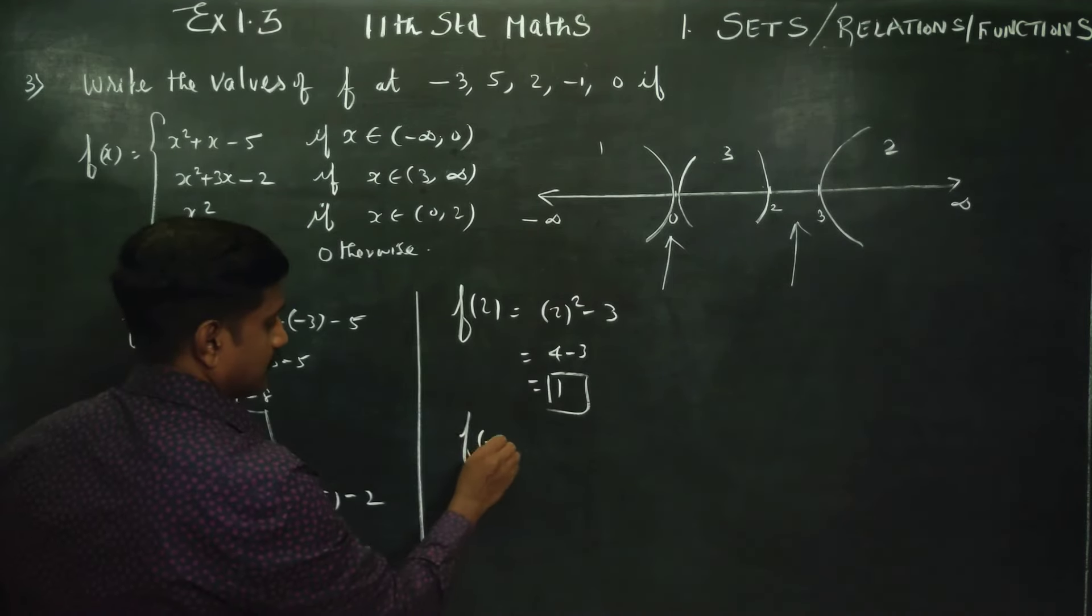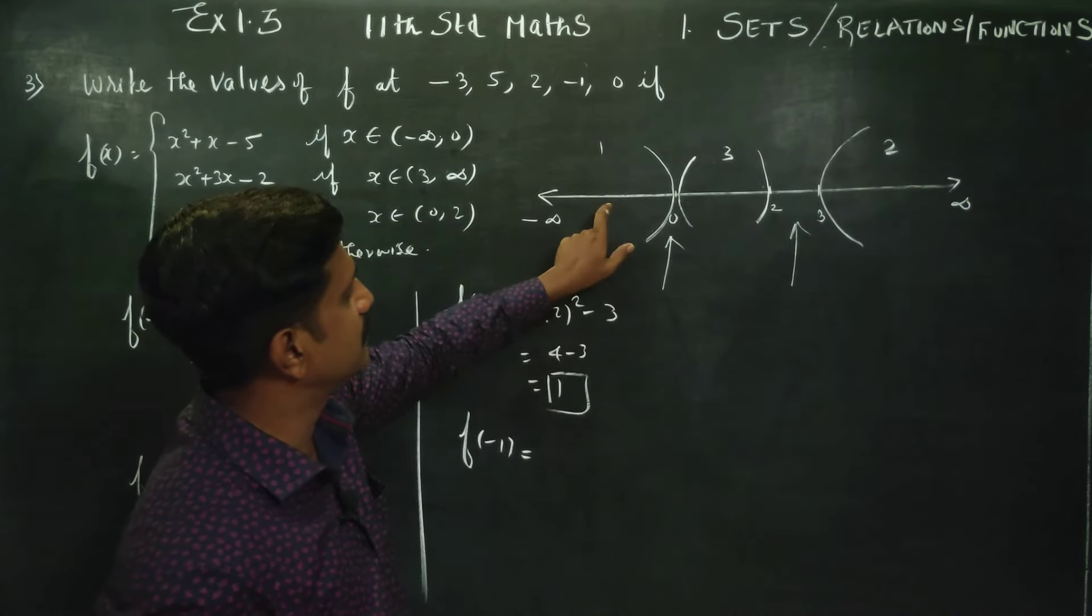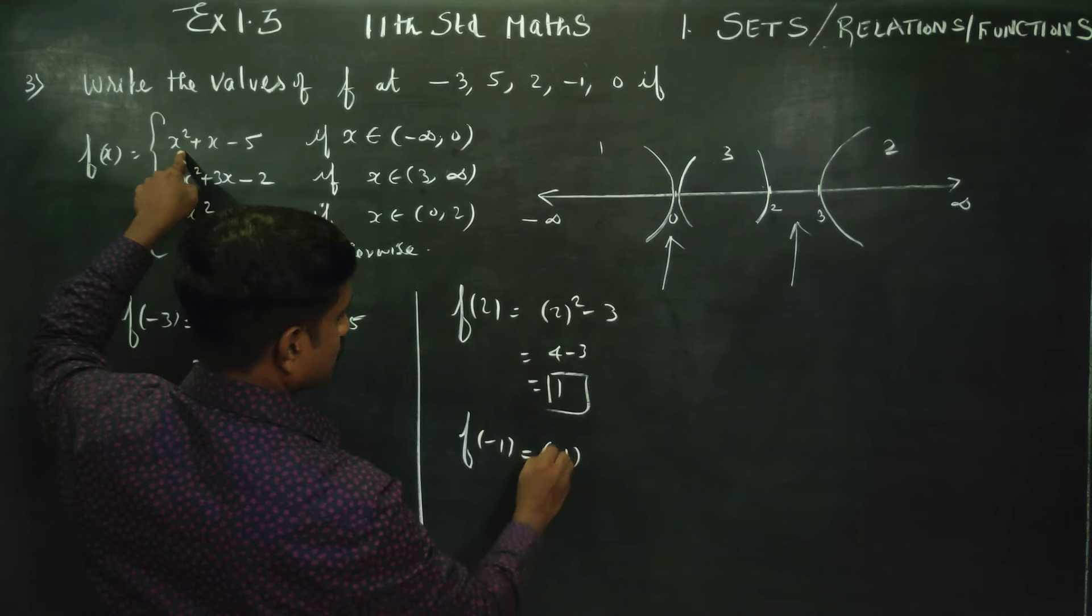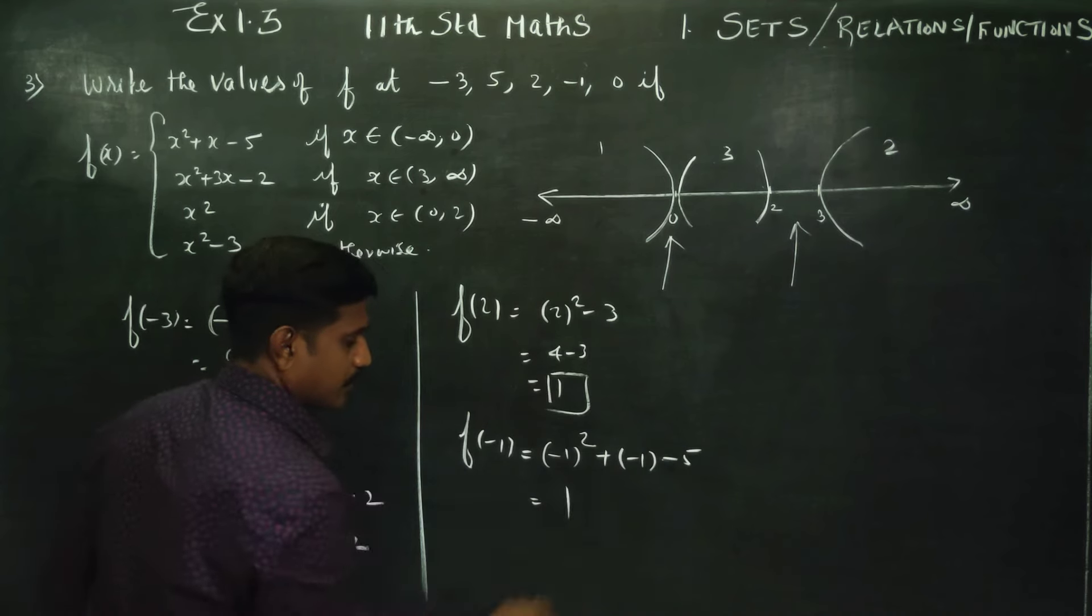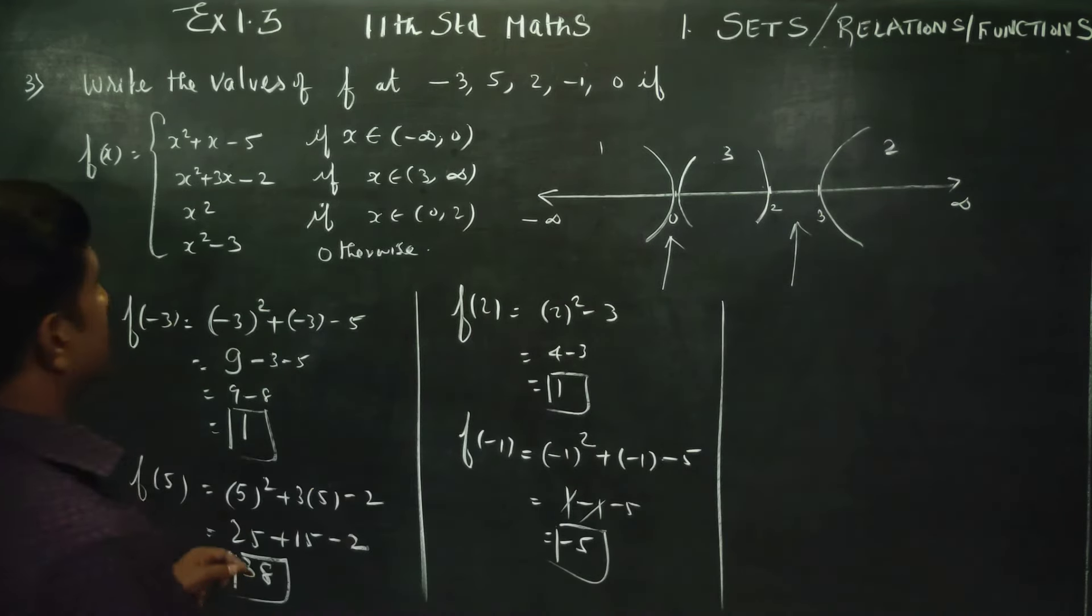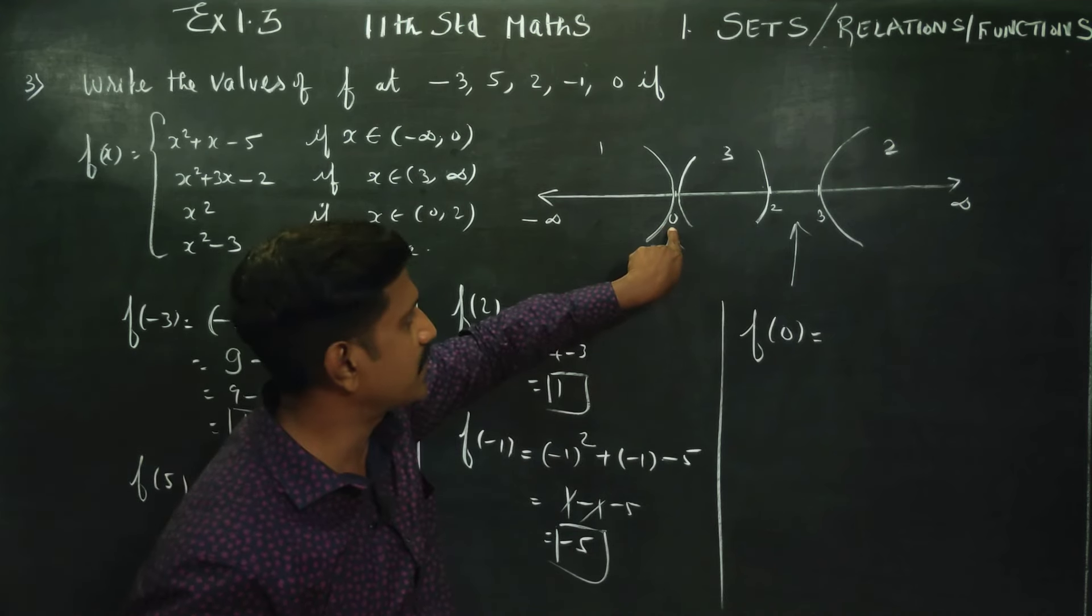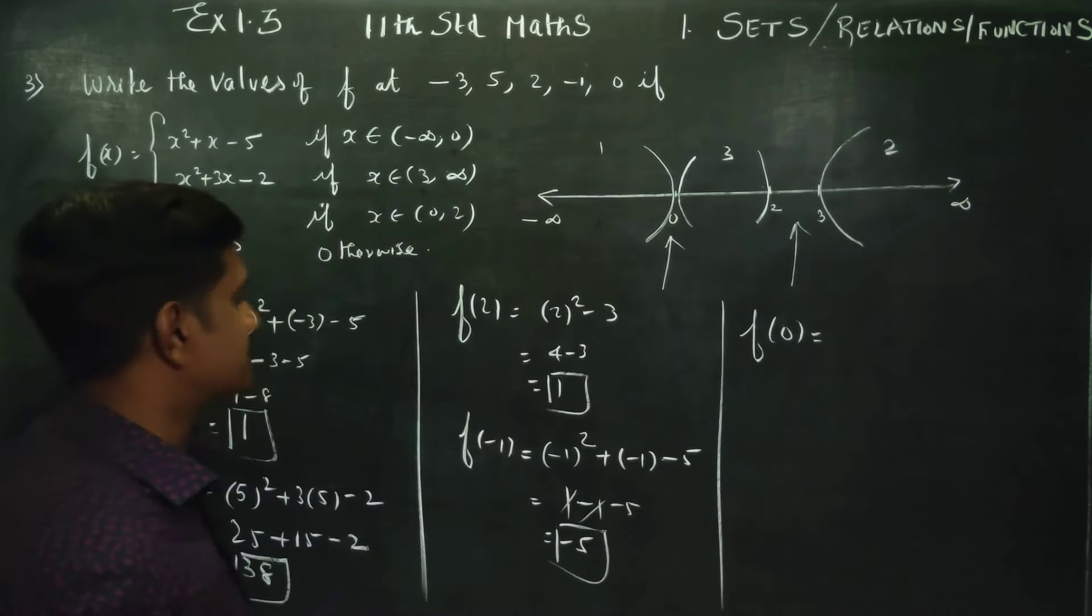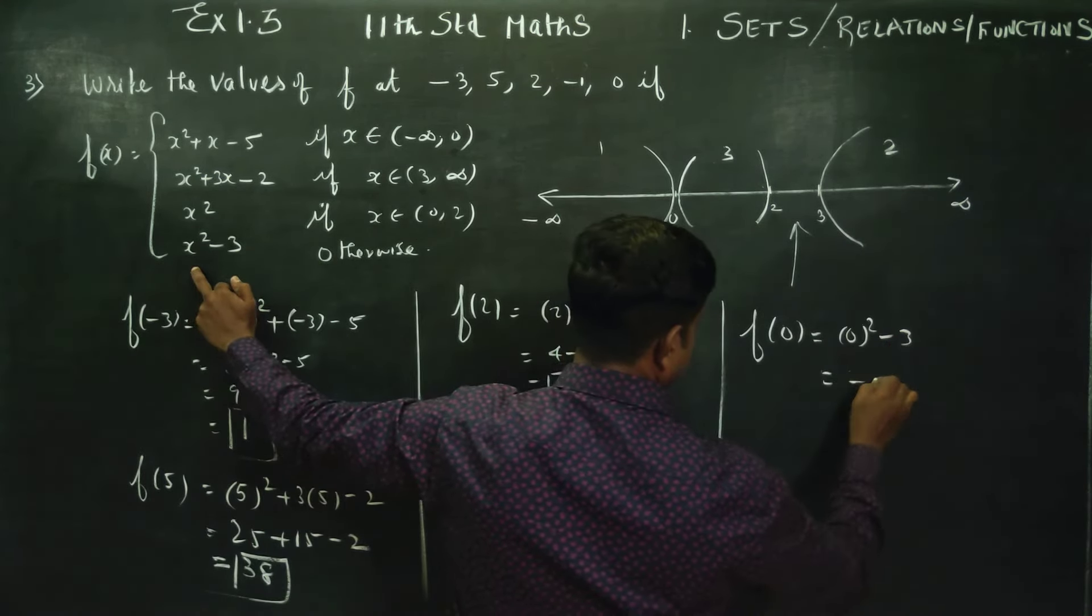Then coming to f of minus 1. Where is minus 1? Minus 1 here. 0. This is f of 0. Now 0 square minus 3, answer is minus 3.